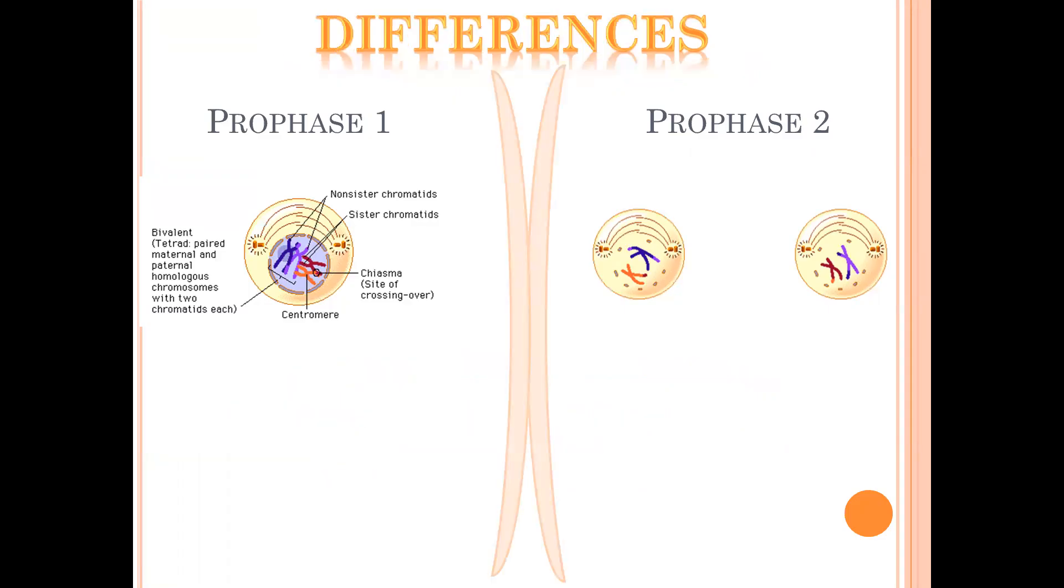The differences between prophase I and prophase II are that in prophase I we have homologous pairing of the chromosomes, whereas in prophase II there is no homologous pairing.